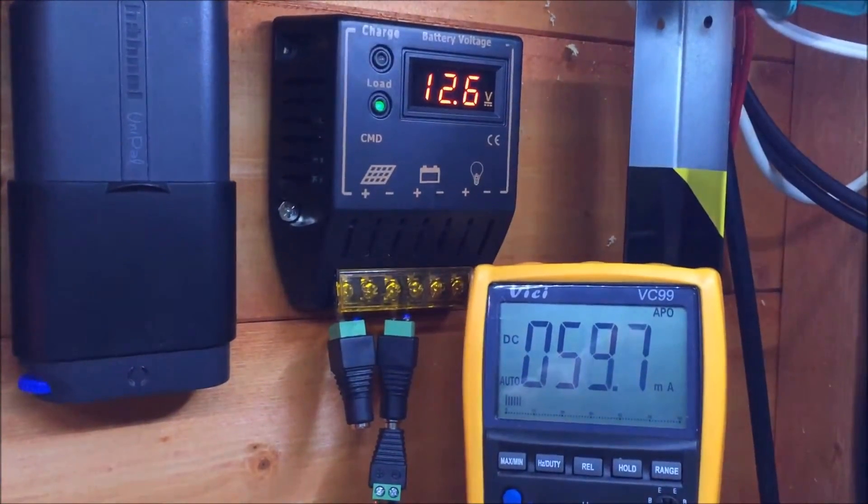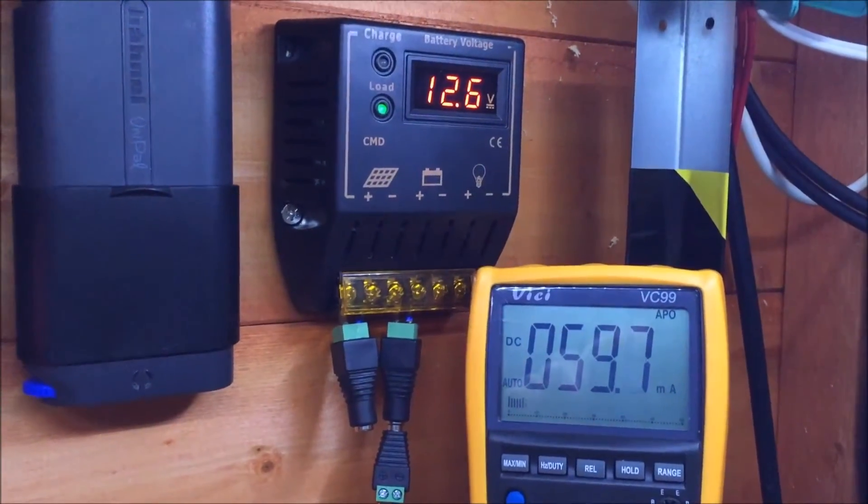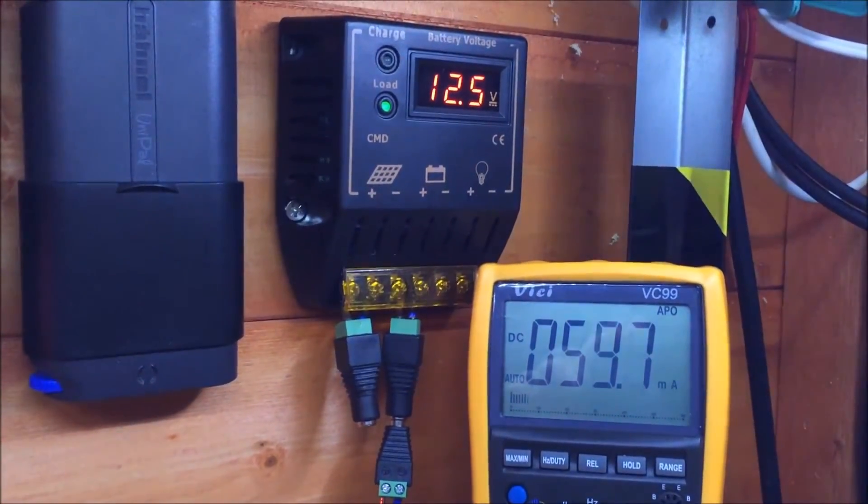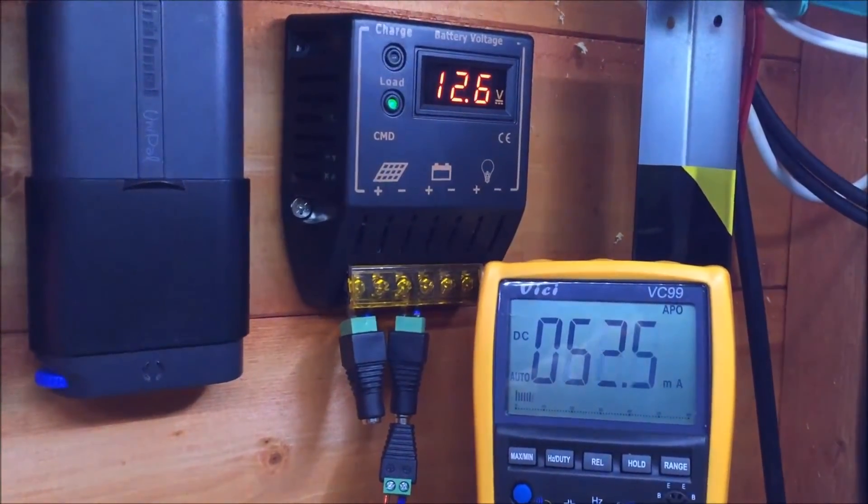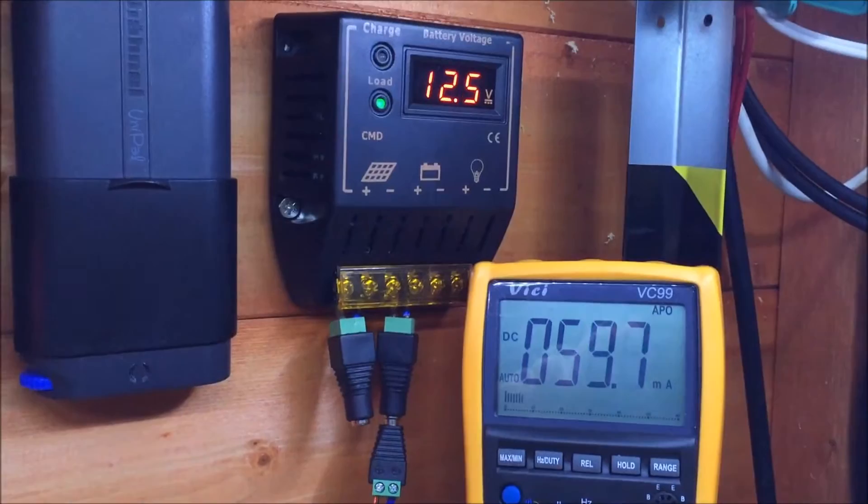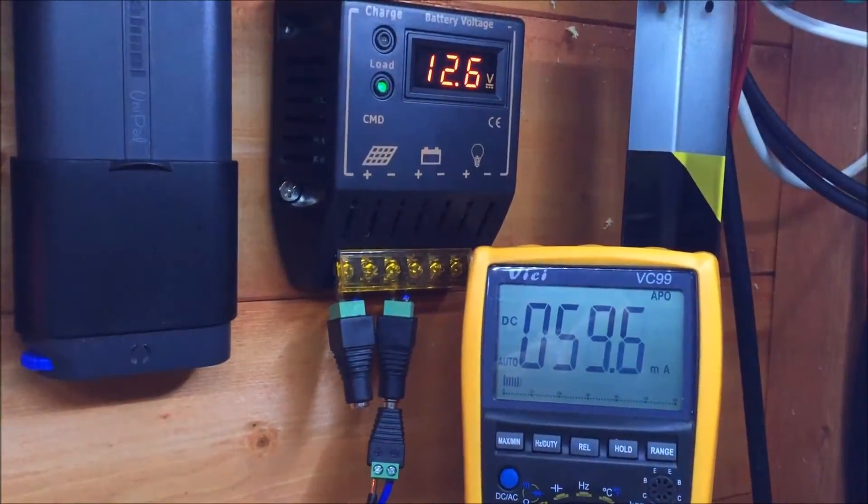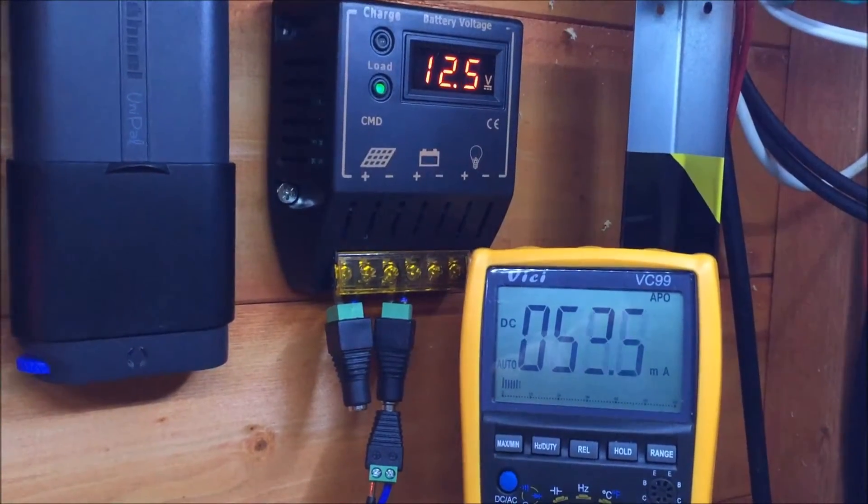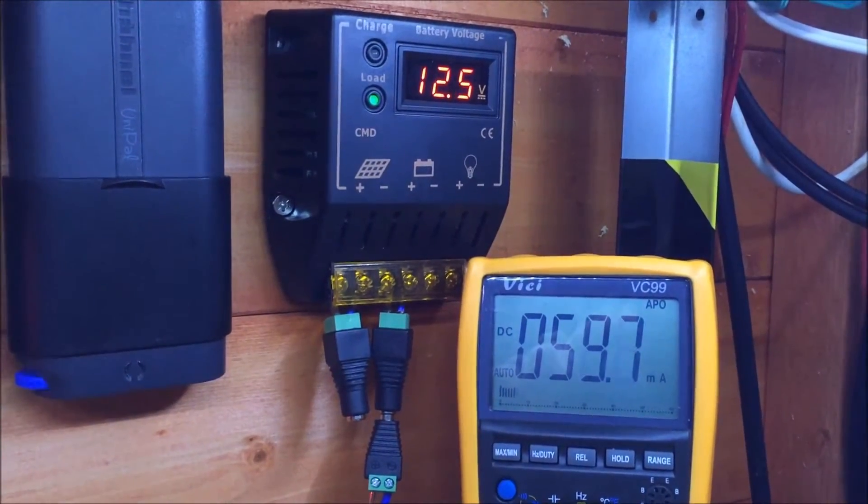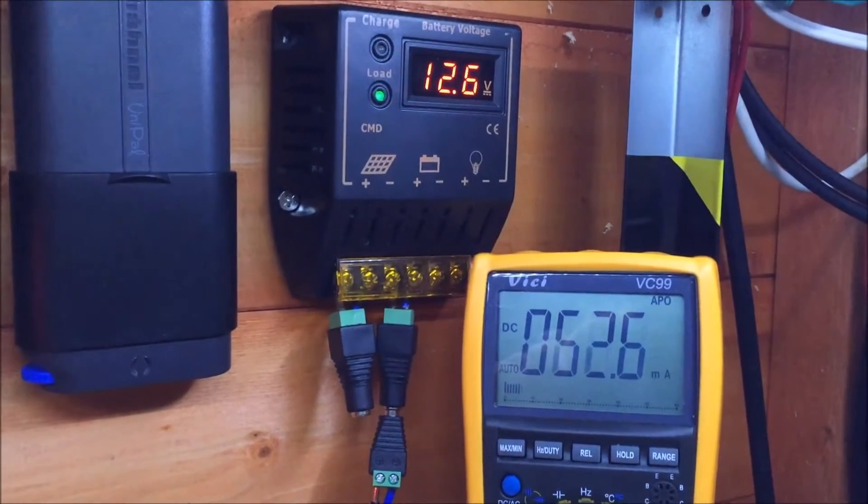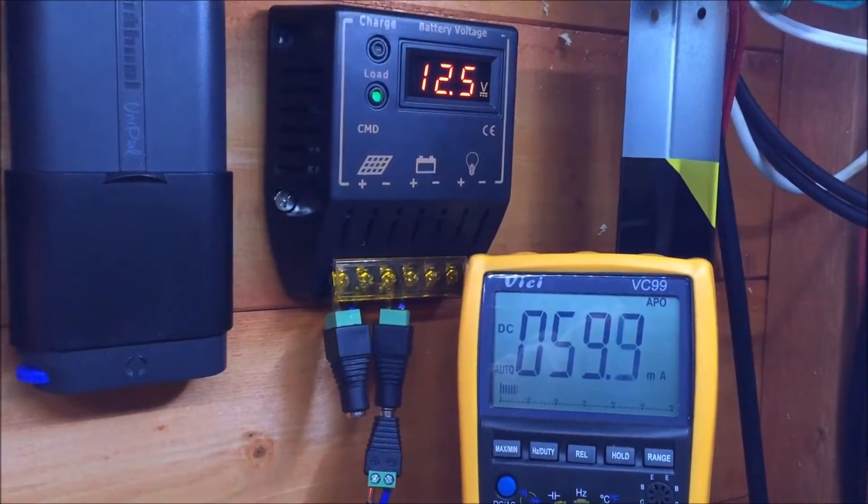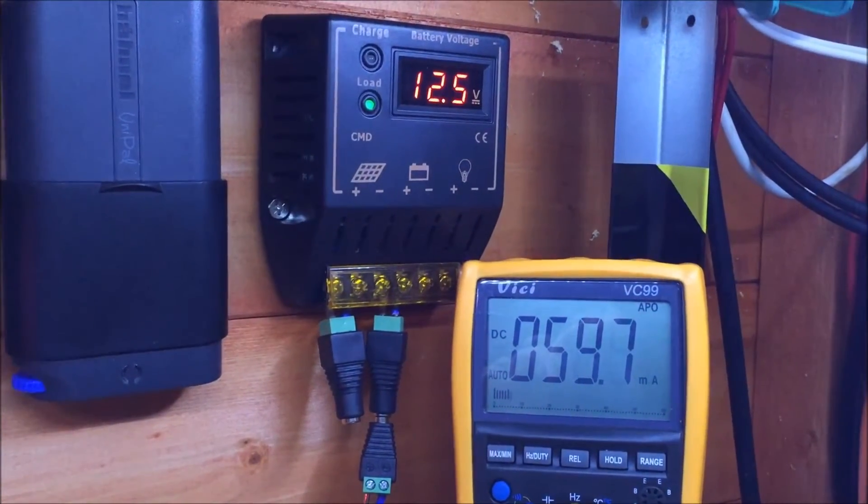Of course the other question is how much current does this little charge controller pull. As you can see the numbers fluctuate in there, and that depends on how many segments of that LED display are on at any one time. But let's say 60mA, all day, all night, and as I'm struggling in this time of year to get as much energy into my battery as possible, that's quite a drain.